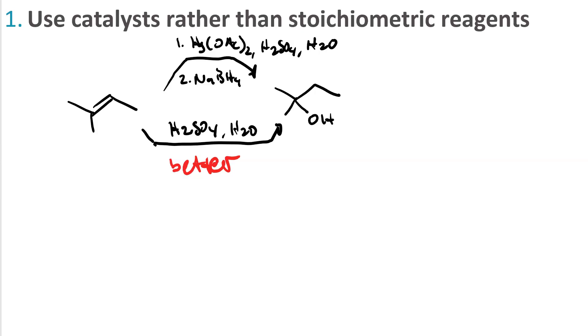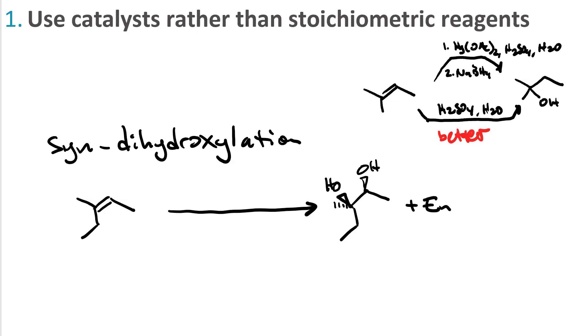Another example is performing syn-dihydroxylation. Syn-dihydroxylation adds two hydroxyl groups across the double bond and it adds them from the same side. Both on top as shown here where both hydroxyl groups are on wedges. And on the bottom which would be the enantiomer where both hydroxyl groups are on dashes.